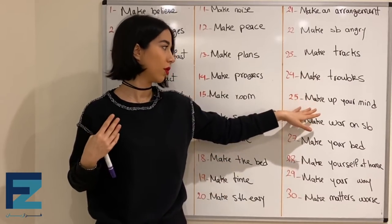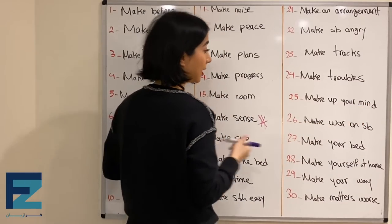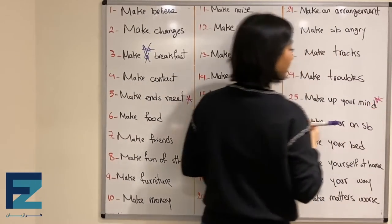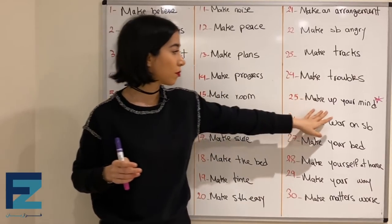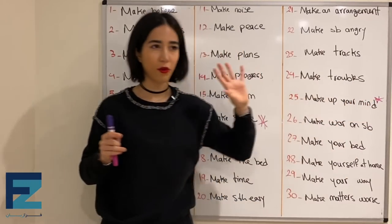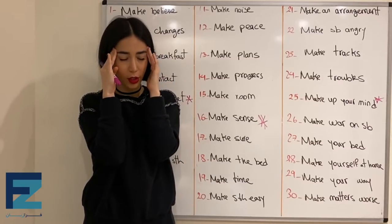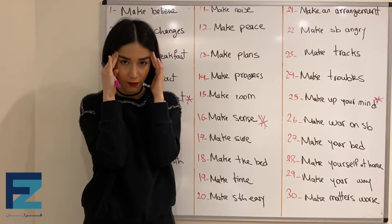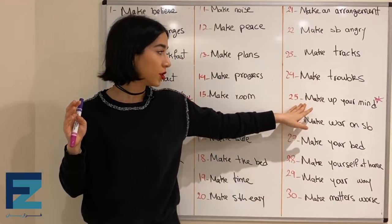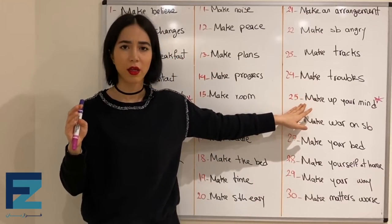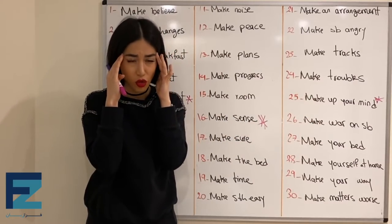Number twenty-five: make up your mind — this is a very commonly used expression. For example when you have a lot of things in your mind and you don't know what to do, you're confused, your mom tells you: come on, make up your mind. وقتی تو ذهنت یه عالمه چیزه، گیج شدی، نمیدونی چی کار بکنی.